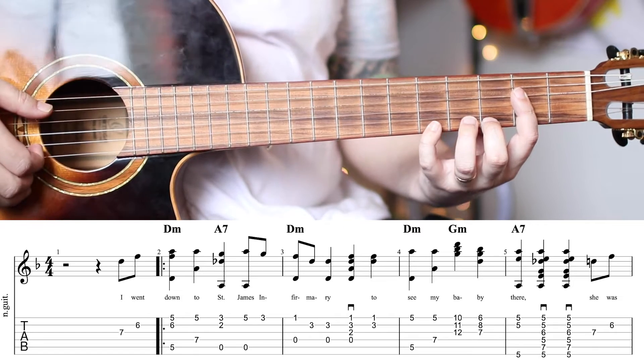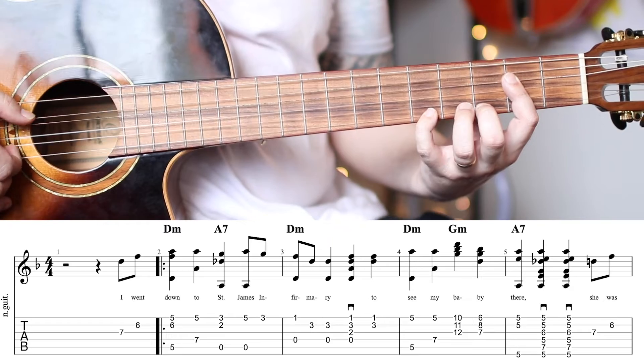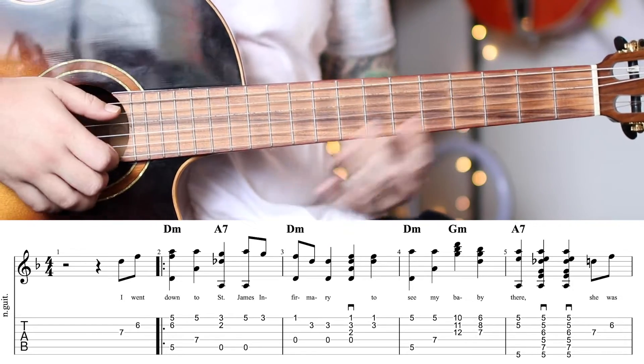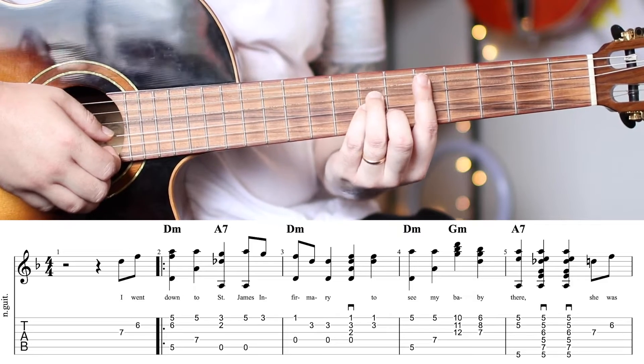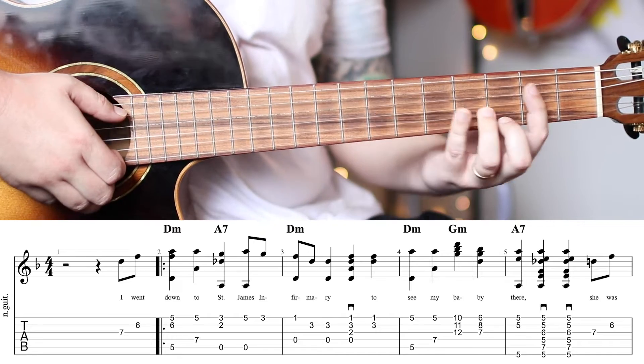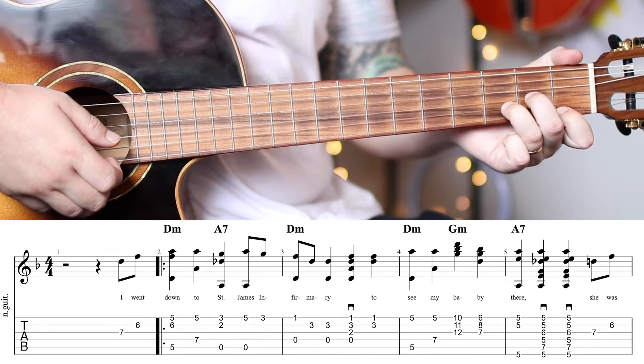Now, if you want that bass to ring out less, you could get a little palm muting on it. Okay, so just that first measure, we get 4 and 1, 2, 3, 4, and make a D minor.